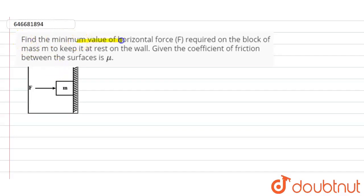So guys, here in this question it is given that find the minimum value of horizontal force capital F required on the block of mass m to keep it at rest on the wall. Given the coefficient of friction between the surfaces is μ.